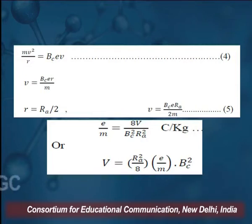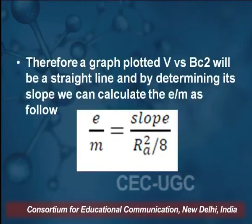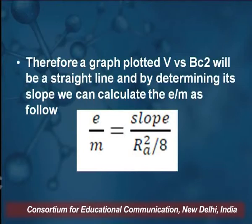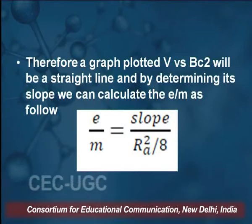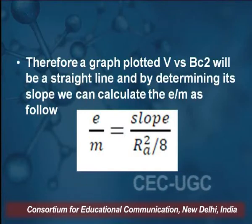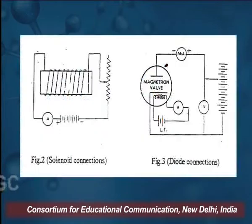From this we calculate the e/m ratio where R equals Ra divided by 2. Then e/m can be found by putting this value. The equation becomes V = Ra² × (e/m) × Bc² / 8. Therefore, the graph plotted as V versus Bc² will be a straight line, and from the slope we can calculate the e/m ratio as: slope = Ra² / 8 × (e/m).